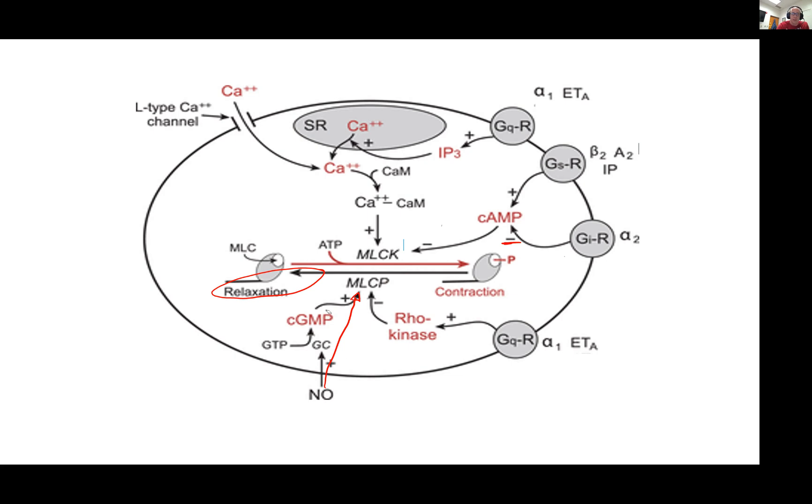So the nitric oxide, you could look at it this way, works on the myosin light chain phosphatase. And the opposite way is the alpha-1 adrenergic Rho kinase pathway. So these are the different ways that you can get vasocontraction or relaxation. If you want more, I encourage you to go look up a couple more YouTube videos or go to cvphysiology.com.